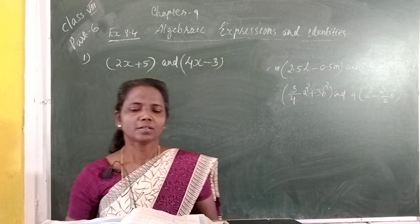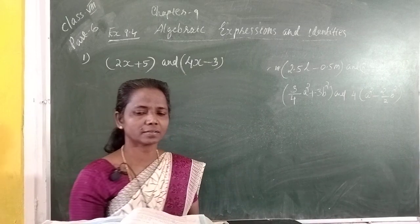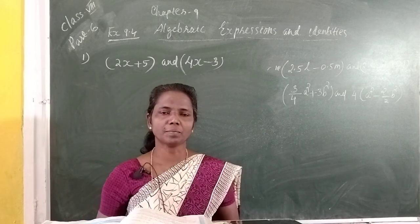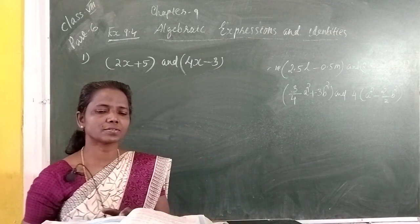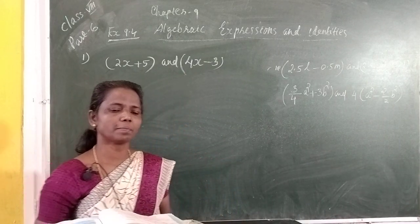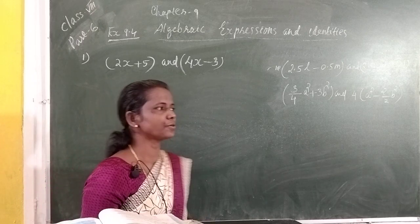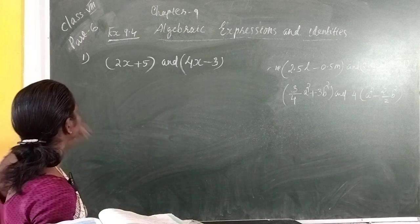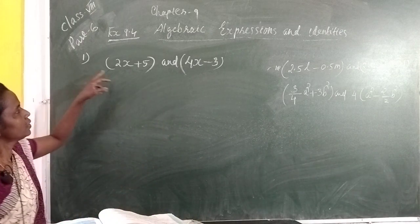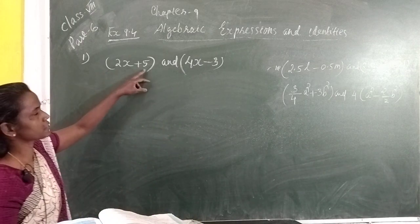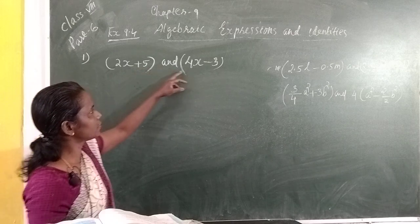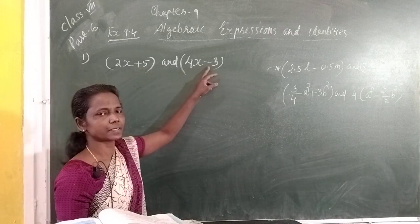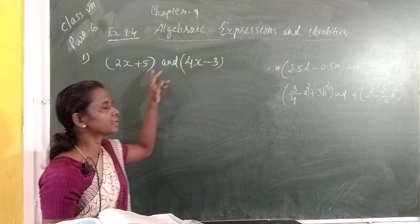Hi children, today exercise 9.4, first question: multiply the binomial. Look, it is the first question — 2x plus 5 and 4x minus 3.